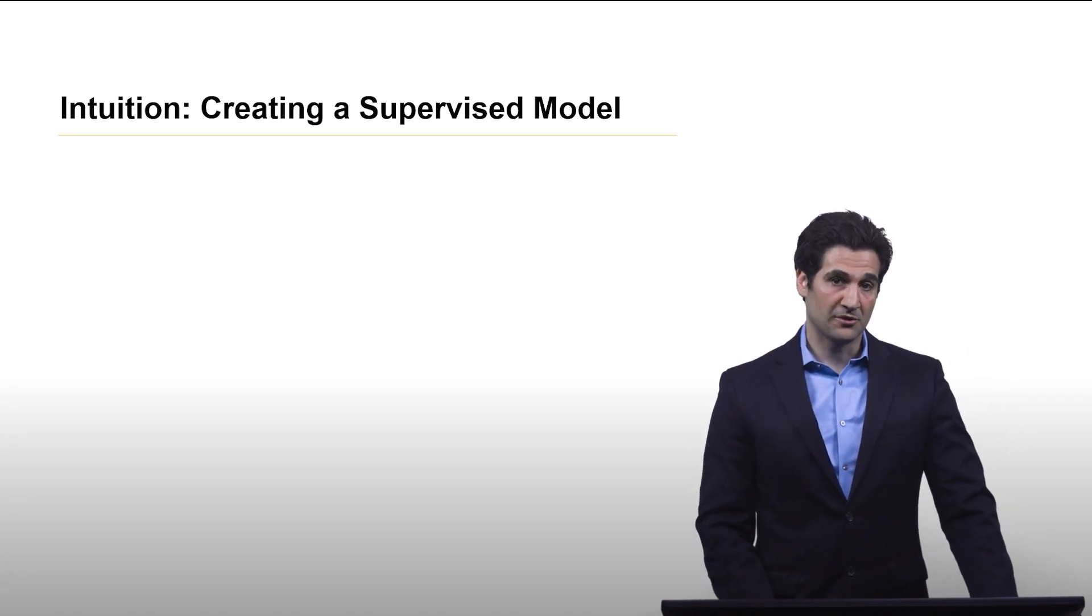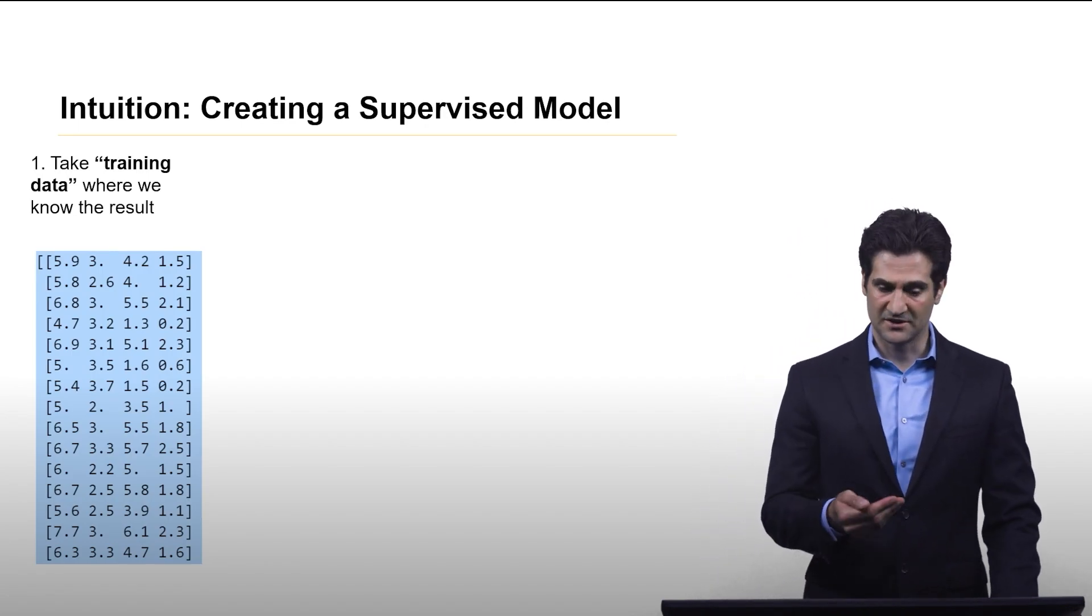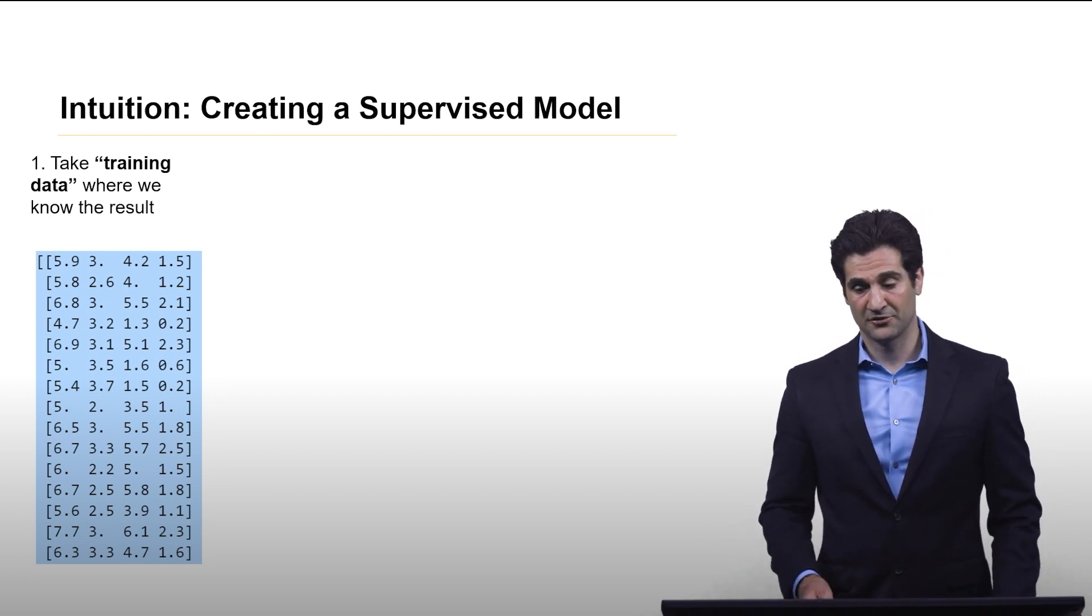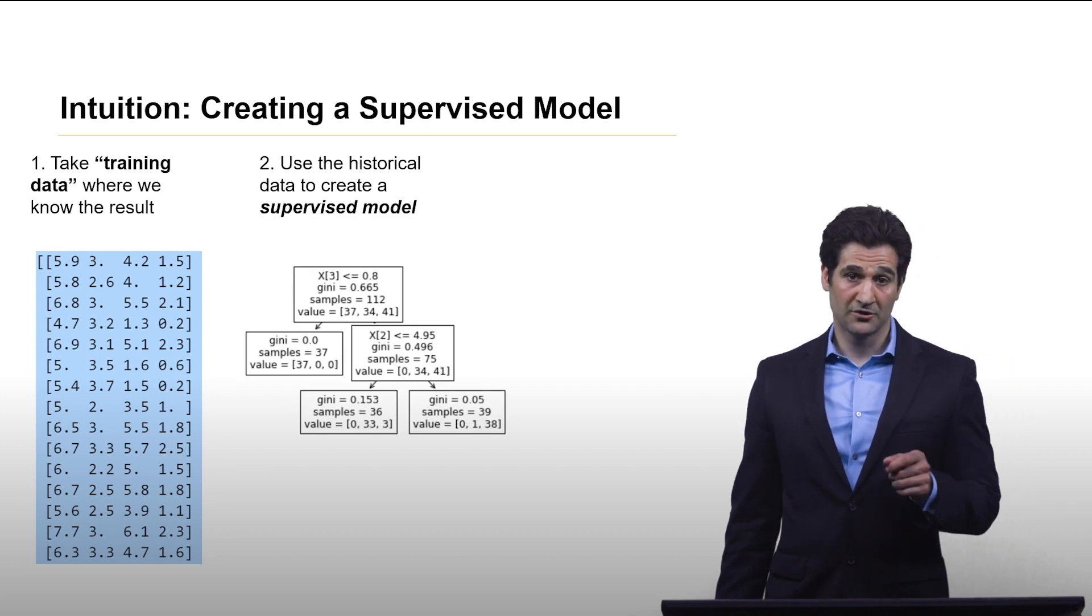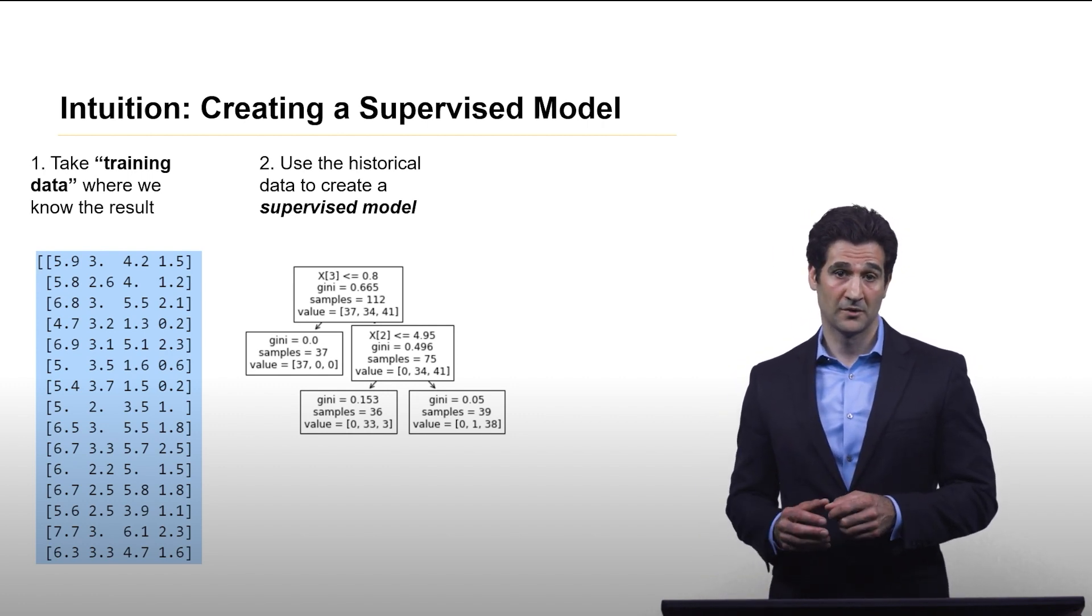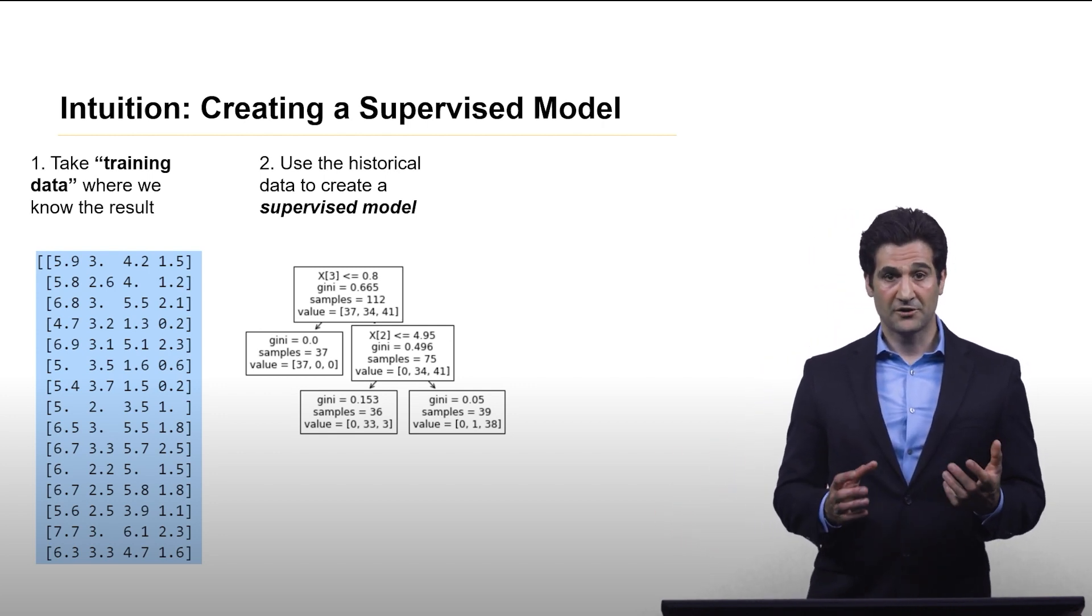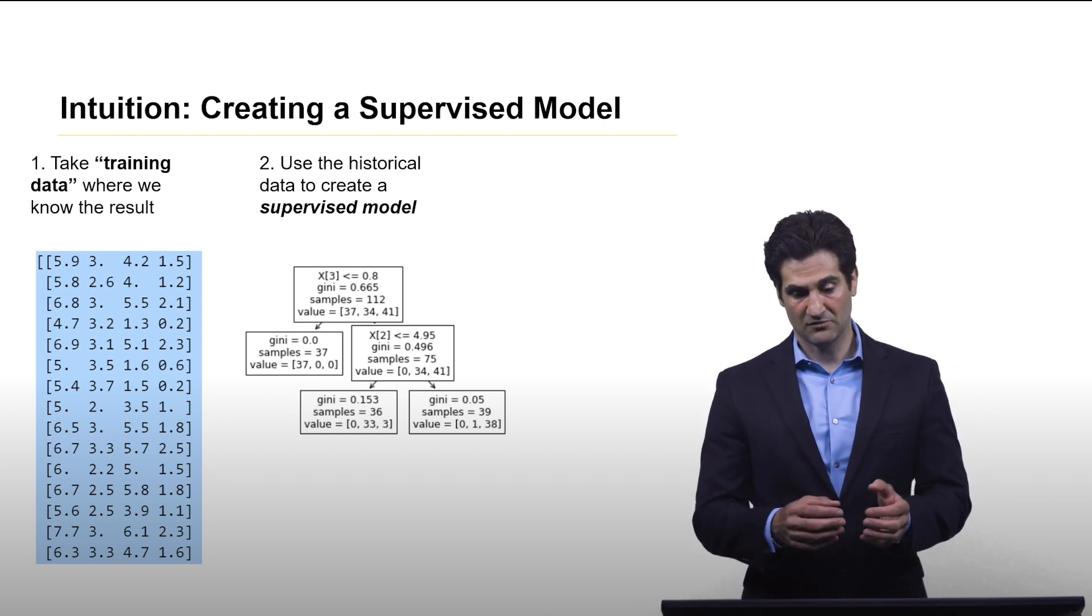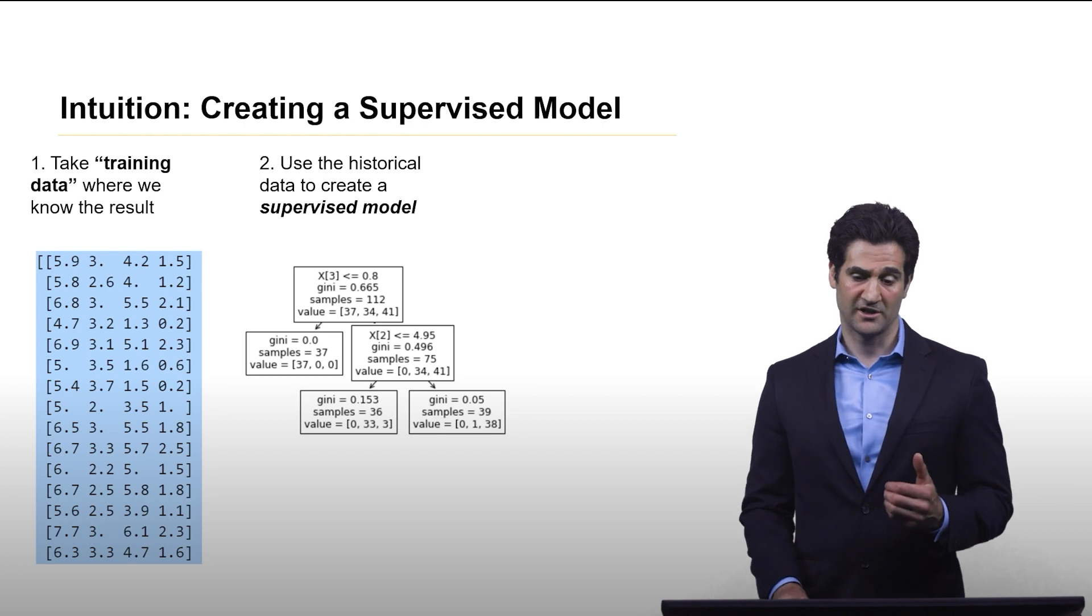Let's give you a little intuition on how a supervised model is created. First, we have training data. This is data where we have both the measurements, the features, as well as the result, the ground truth. Taking this training data, we put it through an algorithm called a training algorithm, which is only used to create a model. The model that results is called a supervised model. Throughout this module, we will be looking at decision trees. Here is a picture of a decision tree for our iris flower dataset. This is the result of a training algorithm.